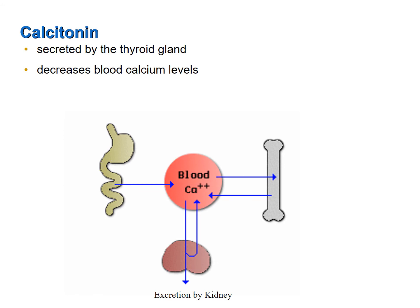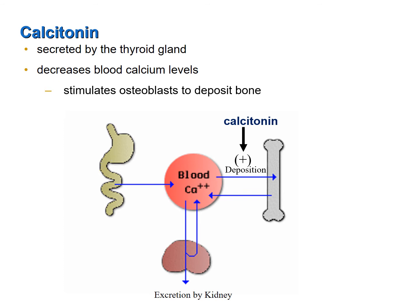Calcitonin is a hormone secreted by the thyroid gland. When you hear the term thyroid hormones, that refers specifically to T3 and T4, not calcitonin, even though it is indeed secreted by the thyroid gland. Calcitonin is made in a different location in the thyroid gland than T3 and T4, and its chemistry is completely different — it is hydrophilic but not composed of iodine and the amino acids that compose T3 and T4. Calcitonin decreases blood calcium levels by stimulating osteoblasts to deposit bone. As bone is deposited, calcium and phosphorus are removed from the blood and deposited into the newly forming bone.